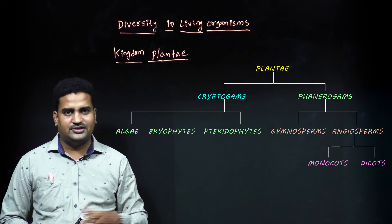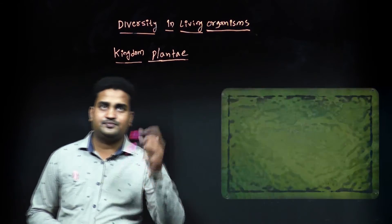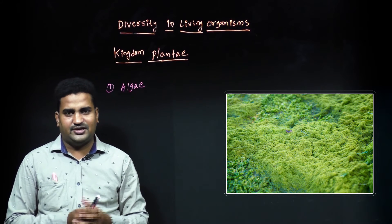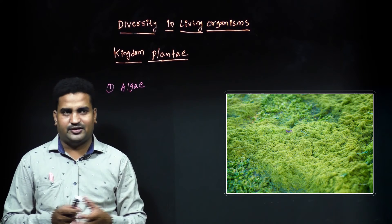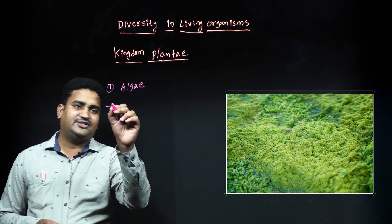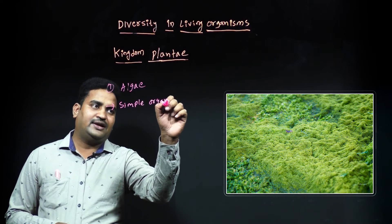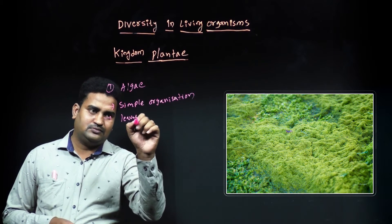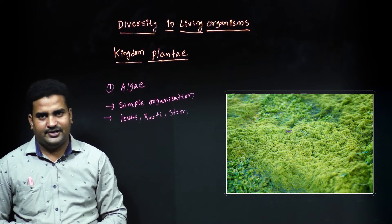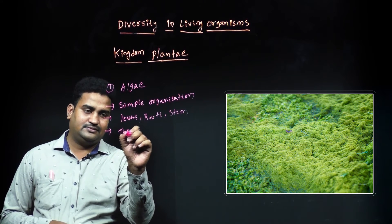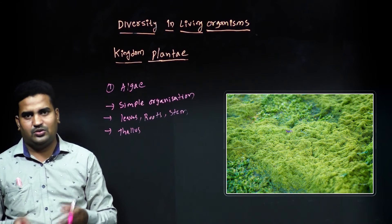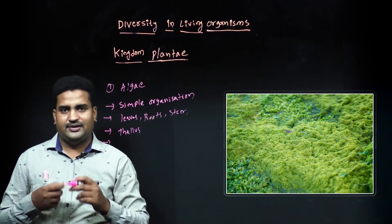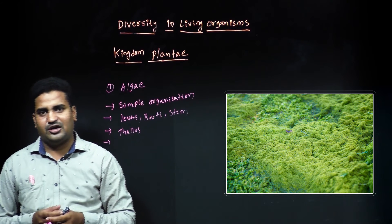Let us talk about algae. Algae can grow in damp shady places and also in aquatic environments. Algae show simple organization — they do not contain leaves, roots, or stem. Generally their body is called a thallus; it is like a group of cells with no specialized structures.